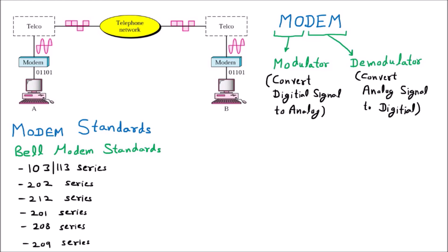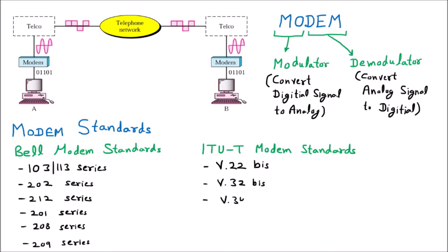The next category under modem standards is ITU-T. There are further categories in the ITU-T modem just like the Bell modem. We have v.22, v.22 bis — these are the names of the modem — then v.32 bis, then v.34 bis.